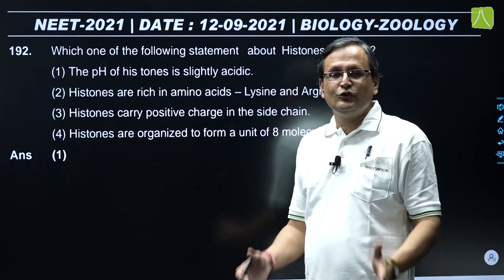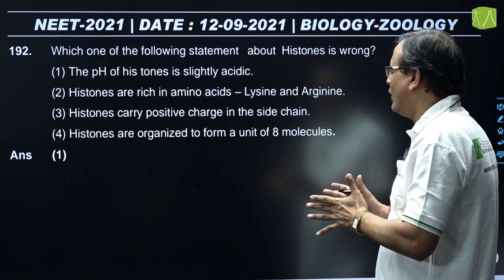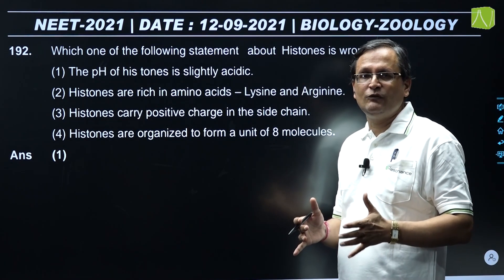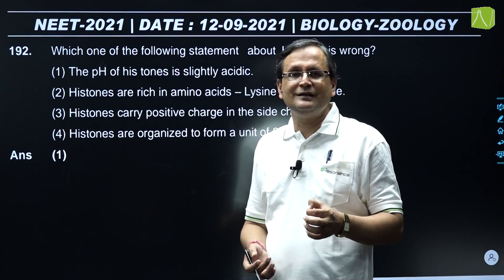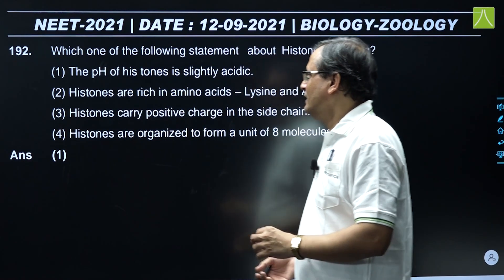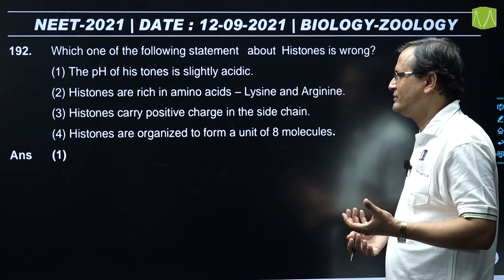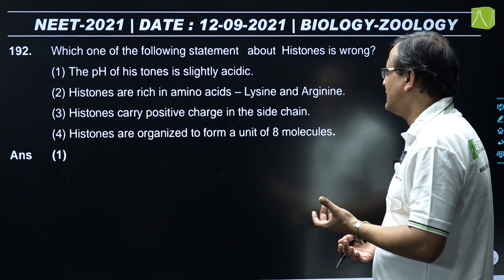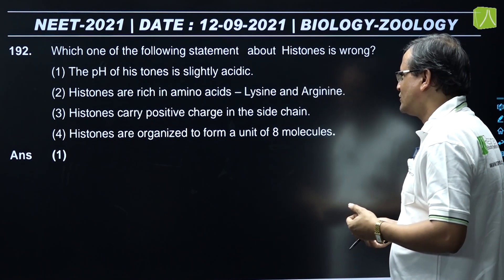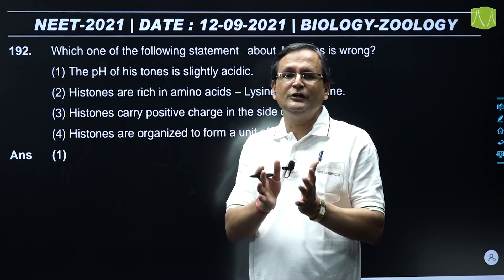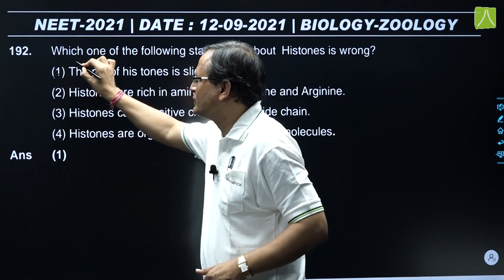Question 192: Which statement about histones is wrong? Option 1 - the pH of histones is slightly acidic - this is wrong, because histones are alkaline or basic proteins. Option 2 - histones are rich in amino acids lysine and arginine - correct, both are alkaline amino acids. Option 3 - histones carry positive charge in the side chain - correct. Option 4 - histones are organized to form a unit of eight molecules called an octamer (nucleosome) - correct. So options 2, 3, and 4 are correct, and option 1 is wrong. The correct answer is option first.